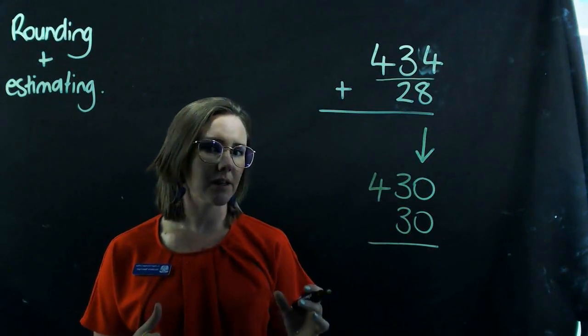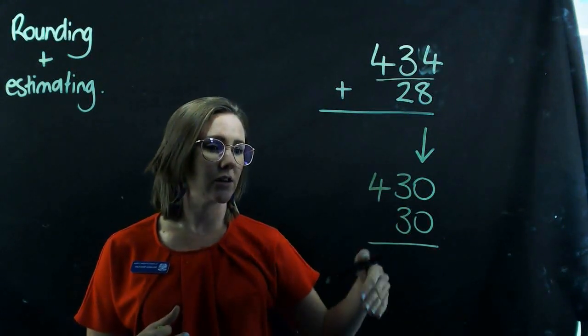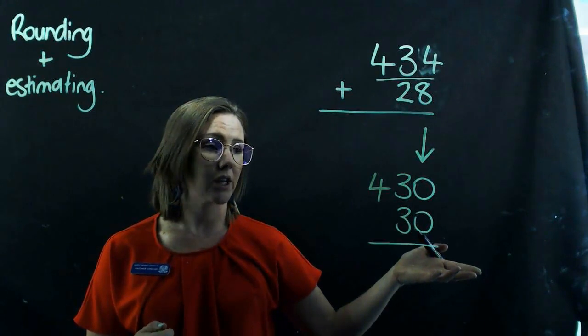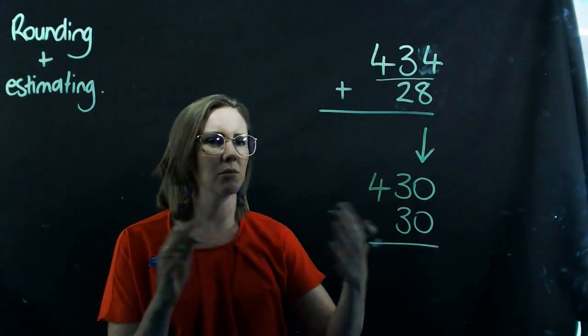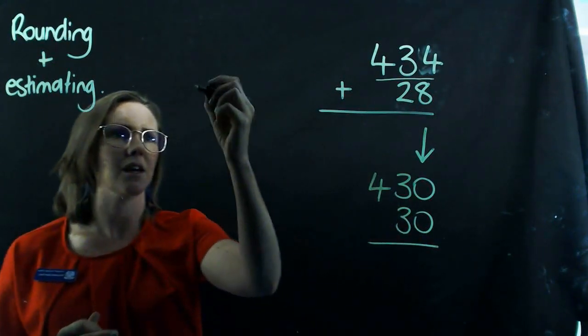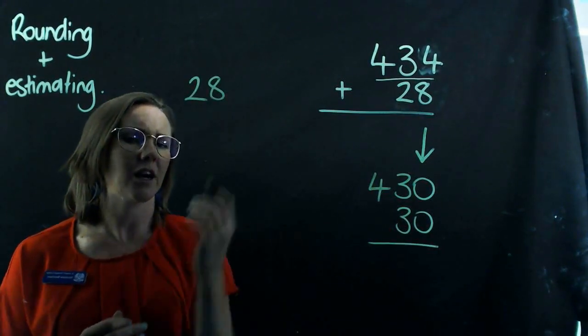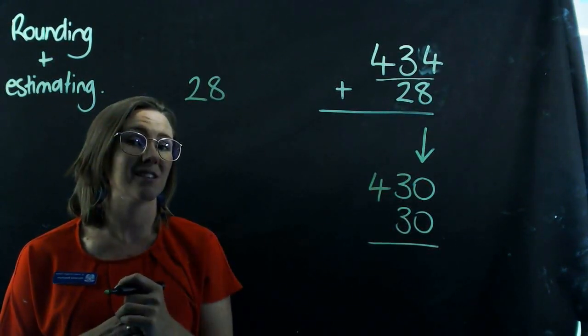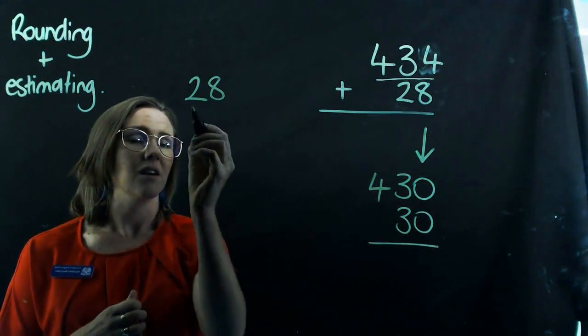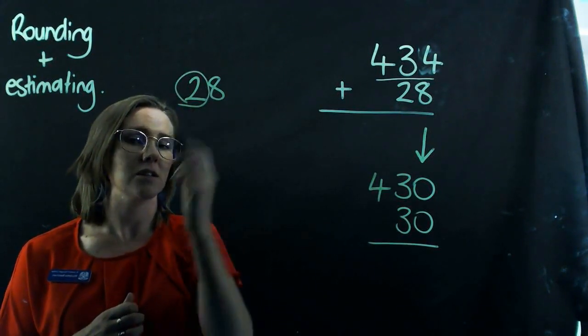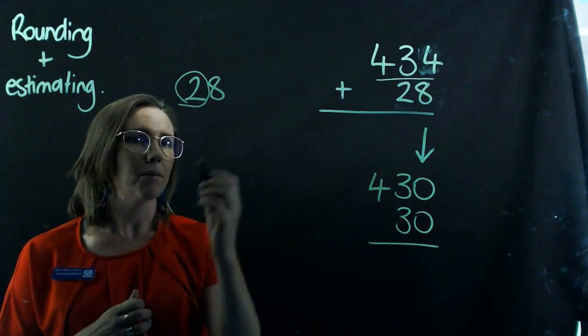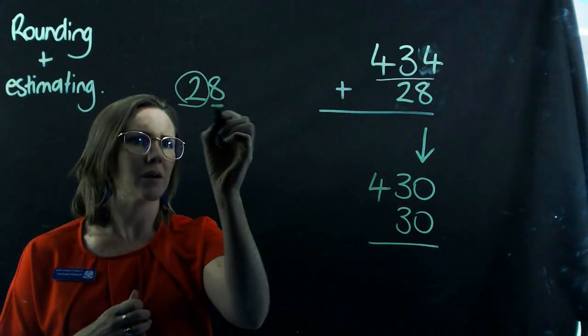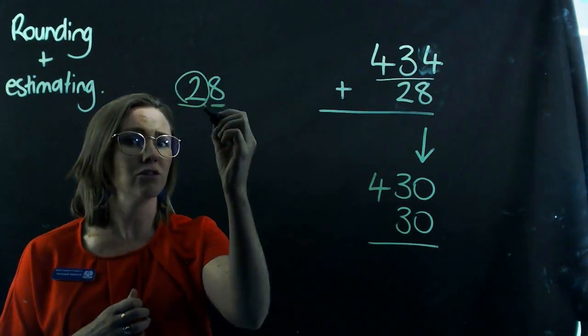Now the trick with rounding is that you actually have to look at the next place value down to work out what to do. So this is a little bit of a side lesson here, but say if I've got 28 and I've actually asked you to round it to the nearest 10. I'm looking at this two as the tens in the place value, but what I need to do is to look at my eight to work out what I'm going to do to my tens.